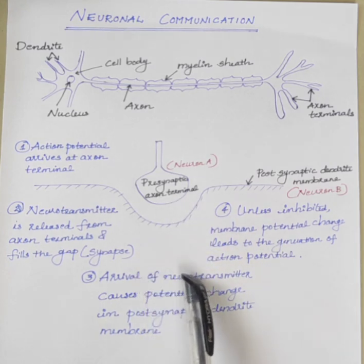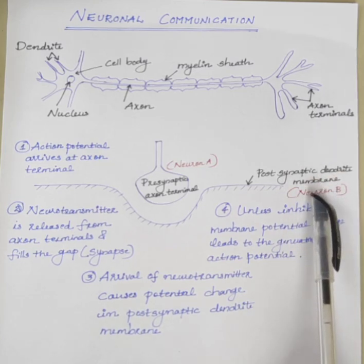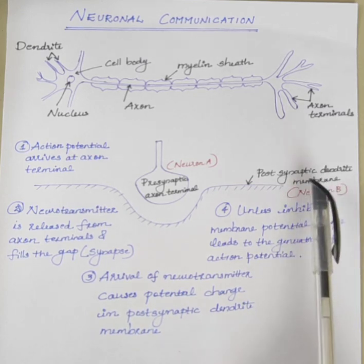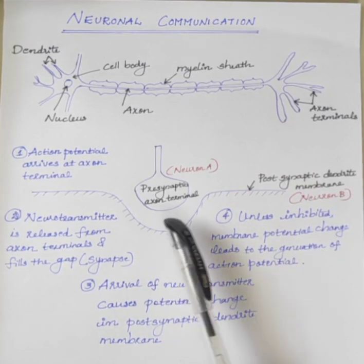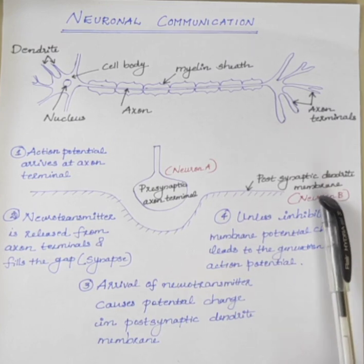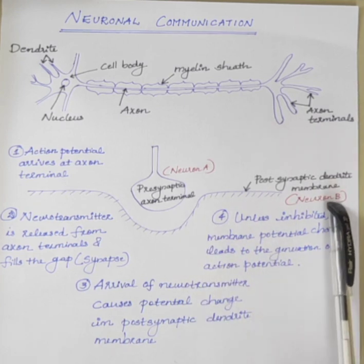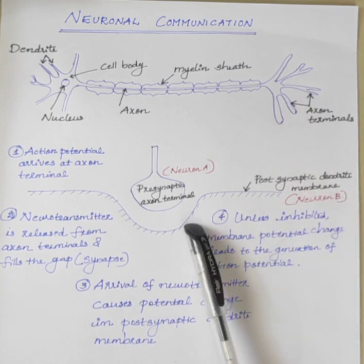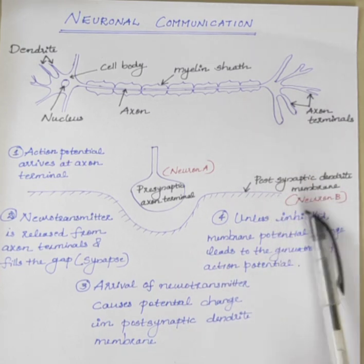The arrival of neurotransmitters causes a potential change in the dendrite membrane. This potential change produces an action potential in neuron B. Neurotransmitters can either excite or inhibit the dendrite membrane. If the function of the neurotransmitter is to inhibit the dendrite membrane, it will not generate any action potential. If the function of the neurotransmitter is to excite neuron B, it produces an action potential and the process repeats.